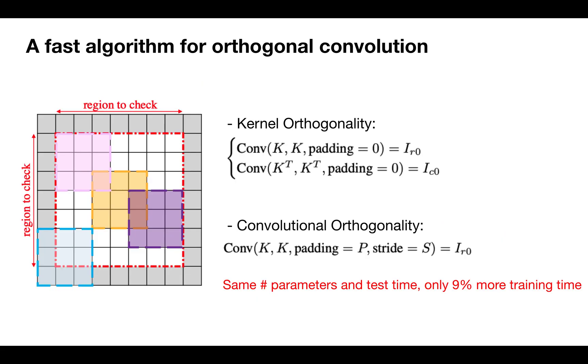Since most of the convolutional kernel has a very small spatial size, we provide an efficient algorithm to implement this regularization, which only introduces 9% training time overhead.